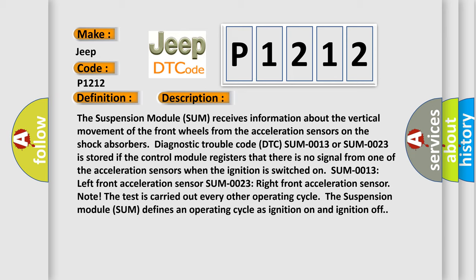SUM-0013: left front acceleration sensor. SUM-0023: right front acceleration sensor. Note: The test is carried out every other operating cycle. The suspension module SUM defines an operating cycle as ignition on and ignition off.